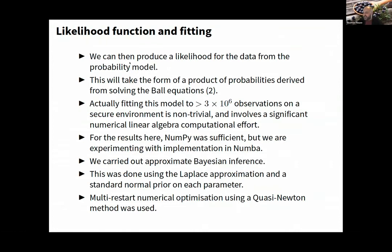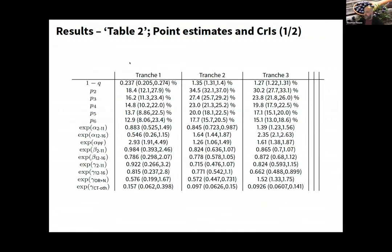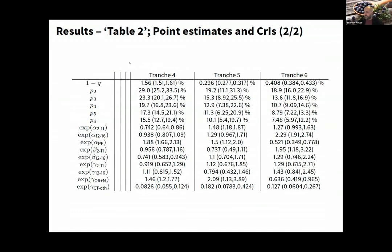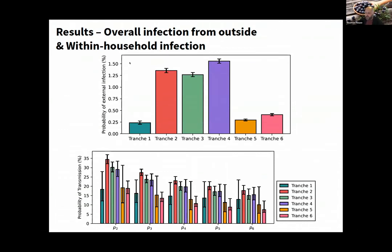These are point estimates but easier to visualize. This first plot shows probability of infection during the tranche. Tranche 1 is low prevalence, 2-4 are high prevalence, 5-6 are lower prevalence again after lockdown while things were kept low as Delta emerged and people got vaccinated.